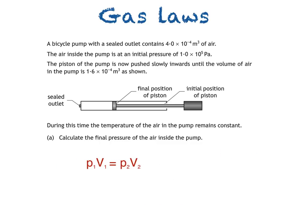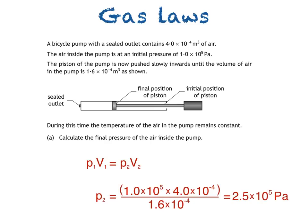Next we substitute our initial pressure and volume P1 and V1 into the equation together with the final volume V2. Be careful when doing this as it's easy to get mixed up. This gives us 1.0 times 10 to the power of 5 times 4.0 times 10 to the power of negative 4 is equal to P2 times 1.6 times 10 to the negative 4. To find P2, we just divide both sides by 1.6 times 10 to the negative 4, like this. That gives us a final answer of 2.5 times 10 to the power of 5 pascals.